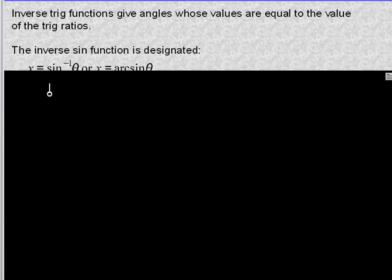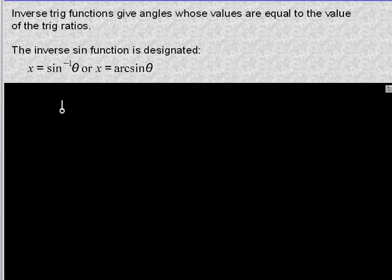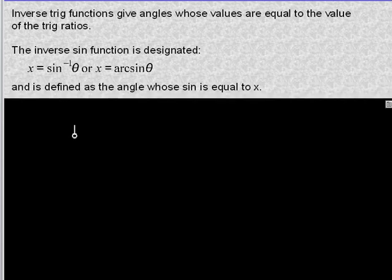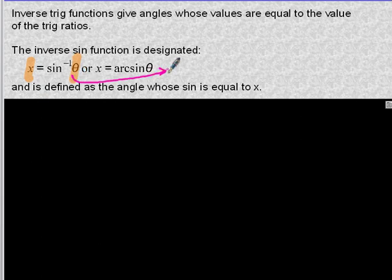You have a couple different ways to write inverse functions. The inverse sine function may look like this: x equals inverse sine of theta, or x equals arc sine of theta. What that means is it's the angle whose sine is equal to x — x is your ratio, and theta is the angle that has that ratio. What you get back from the function is an angle.